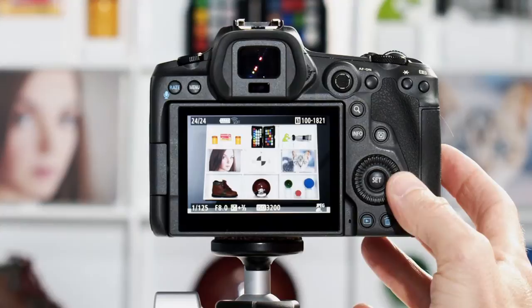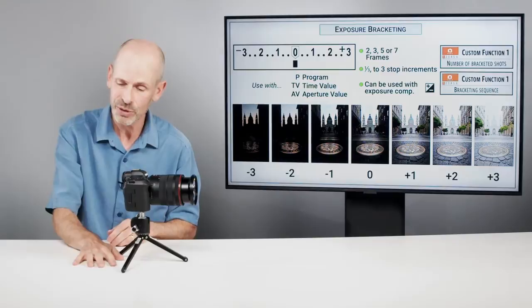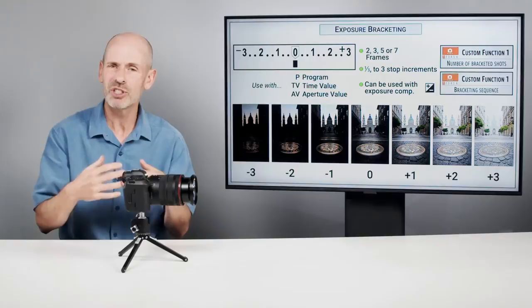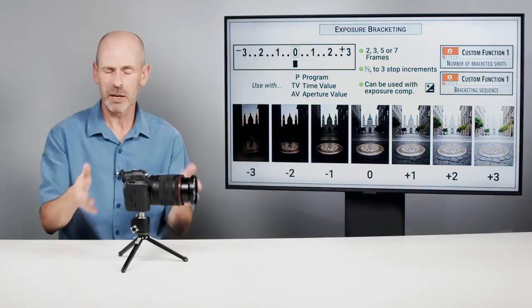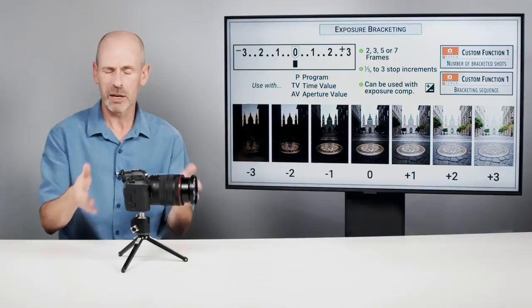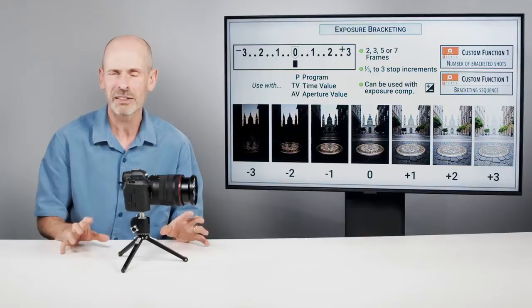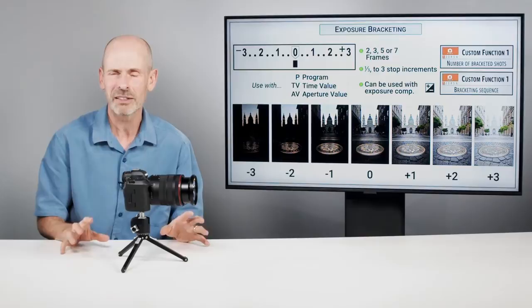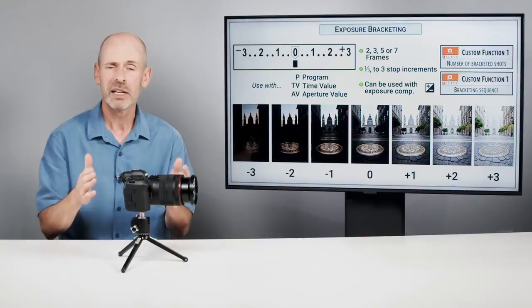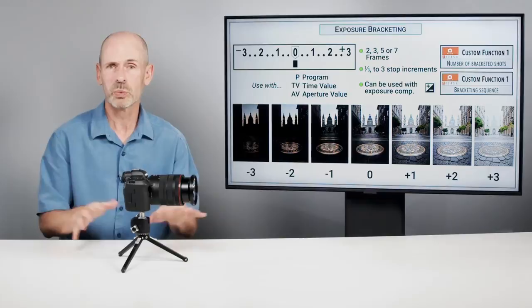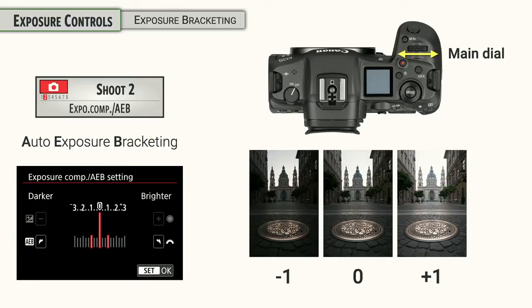For HDR photography or when you're unsure about an exposure in an unusual lighting situation, one of the safest things you can do is shoot three or five or more images to cover the entire range. You'll have all the information when the lighting was good and can deal with it later at home. You can adjust the number of frames, the range, and the order they're shot in. It's a great system for making sure you're getting the correct exposure and that you'll have something that works for your needs later on.